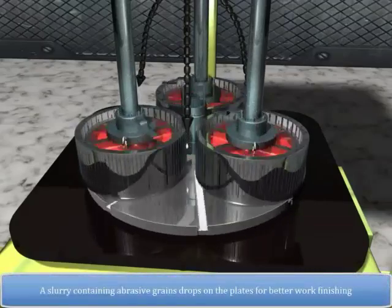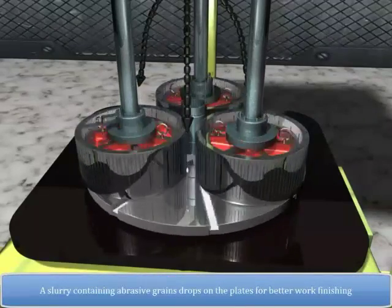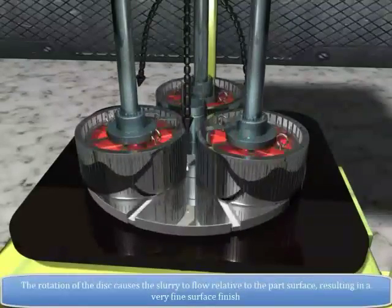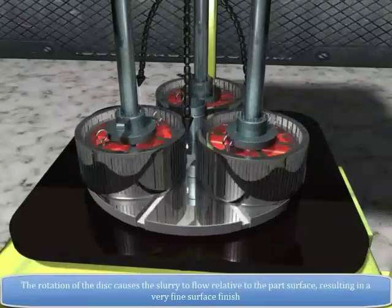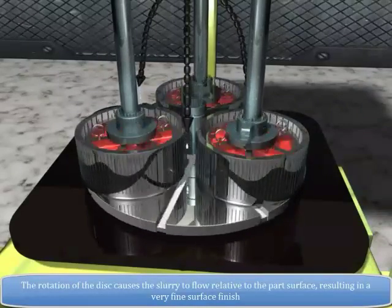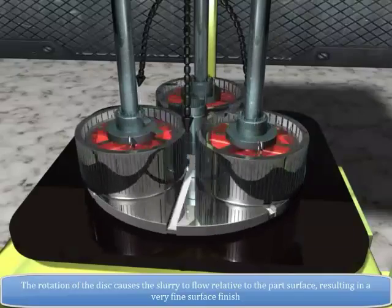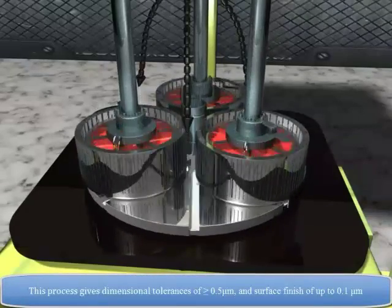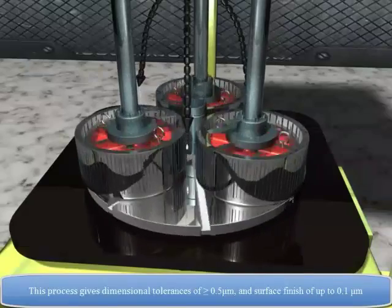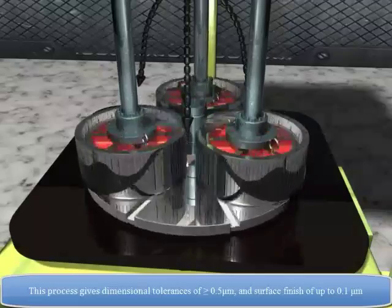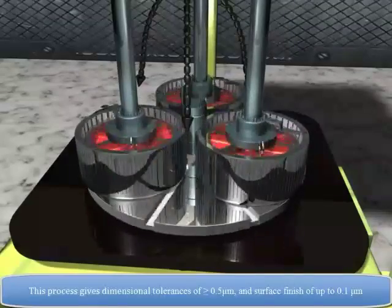A slurry containing abrasive grains drops on the plates for better work finishing. The rotation of the disc causes the slurry to flow relative to the part surface resulting in a very fine surface finish. This process gives dimensional tolerances of greater than or equal to 0.5 micrometers and surface finish of up to 0.1 micrometers.